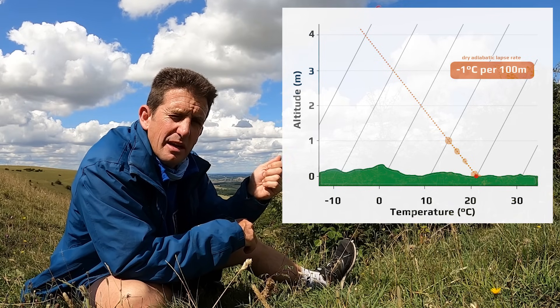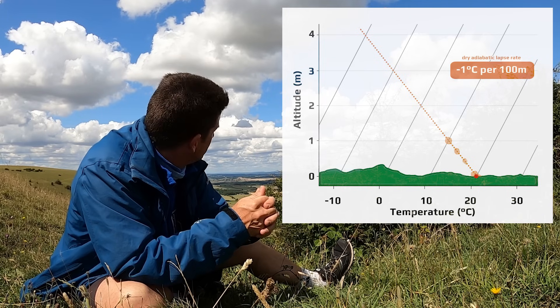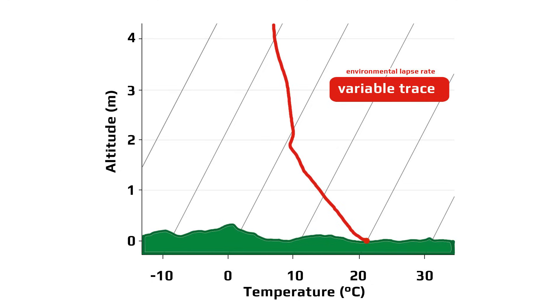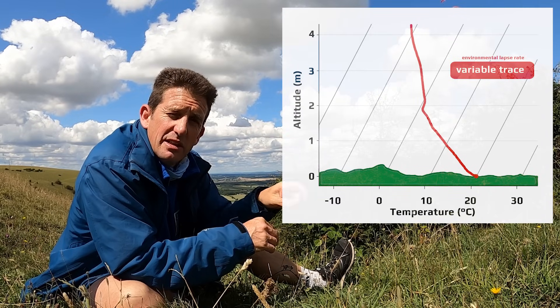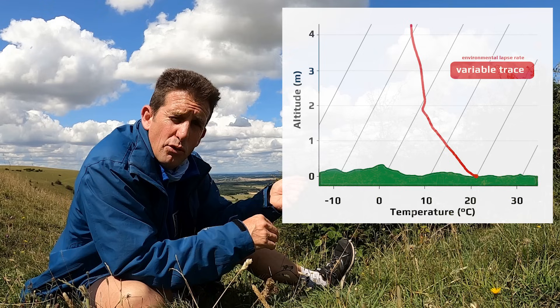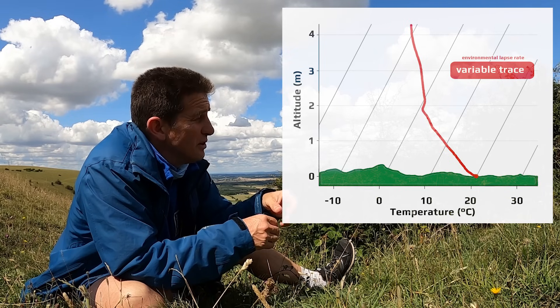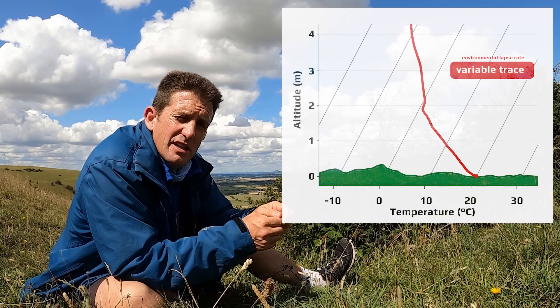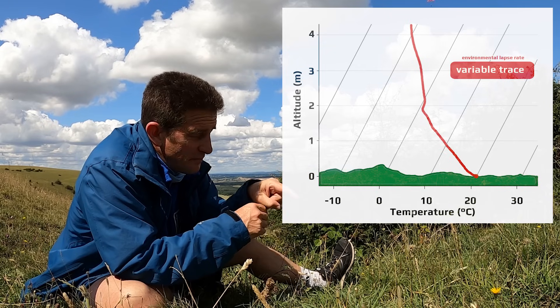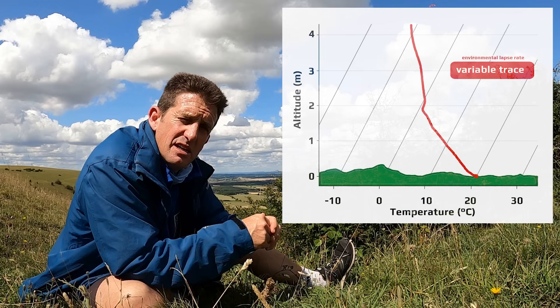That's the dry adiabatic lapse rate — the rate at which the thermal cools. Once you pop out of the thermal and you're in the environmental air, the air that's out there not in thermals, you'll read a different temperature. That's the environmental lapse rate, and it's something they give us with weather balloons every morning. Depending on what country you're in, they'll send balloons up with a temperature tracker and feed that information to the met office.